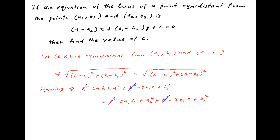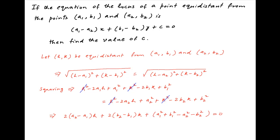This equation can be rewritten as: 2 times (a2 minus a1) times h, plus 2 times (b2 minus b1) times k, plus a1 squared plus b1 squared minus a2 squared minus b2 squared, is equal to 0.